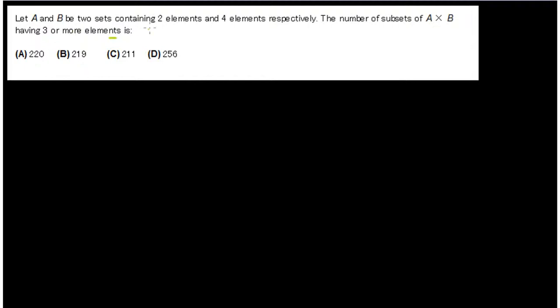We have two sets A and B with two elements and four elements respectively. The number of subsets of A cross B having three or more elements is.